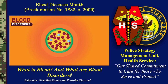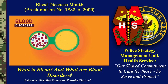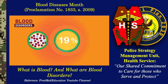The blood cells are mainly red blood cells, also called RBCs or erythrocytes; white blood cells, also called WBCs or leukocytes; and platelets. Plasma, which constitutes 55% of blood fluid, is mostly water — 92% by volume.